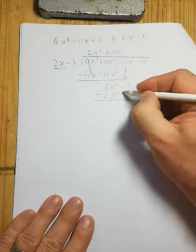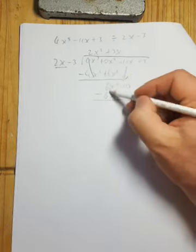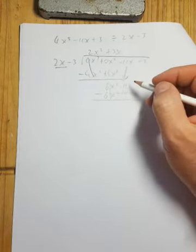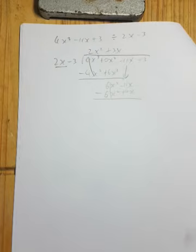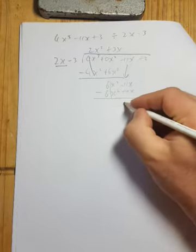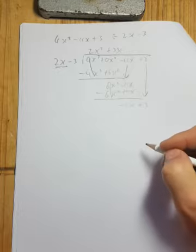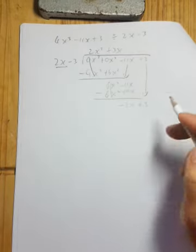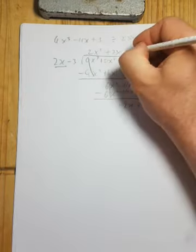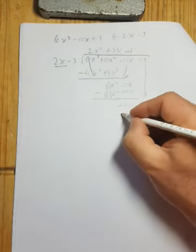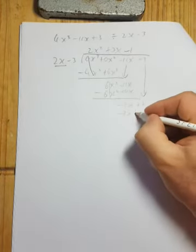Okay, next we change our signs. 6x squared minus 6x squared cancels. And we have now minus 11 plus 9 equals minus 2. And plus 3. So how many times does 2x go into minus 2x? It goes into minus 1 times. Multiplying 2 by minus 1 is minus 2x, minus 3 by minus 1 is plus 3.